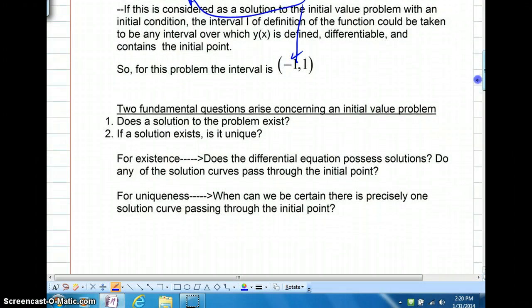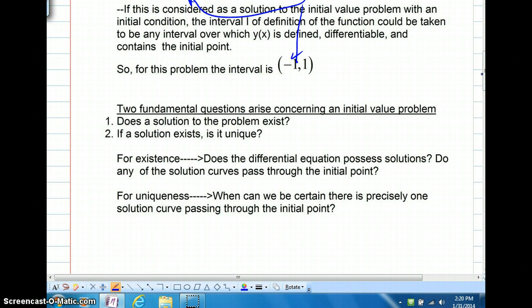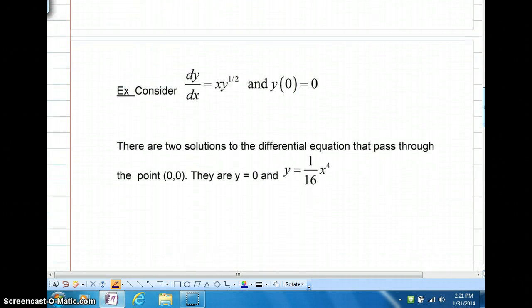Now, that's nothing new, but this sets up what we're about to talk about today. There are two fundamental questions that we have to deal with with an initial value problem. One, does a solution to the problem exist? First of all, is there even an answer to speak of? And then second of all, let's just say that we do have existence. Is it unique? In other words, is this like Tigger from Winnie the Pooh? Is this the only one? For existence, does the differential equation possess solutions? Do any solution curves pass through the initial point? For uniqueness, do we know that there's one and only one curve that would do that? We're going to try to come up with a test to tell.